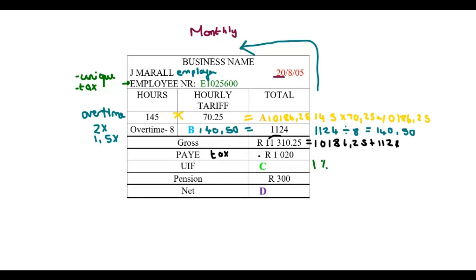UIF is 1% of your salary. In this case, your gross, 1% of your total. Remember that 1% is 1 over hundred. 1% of becomes times, and the gross amount is 11,310.25.